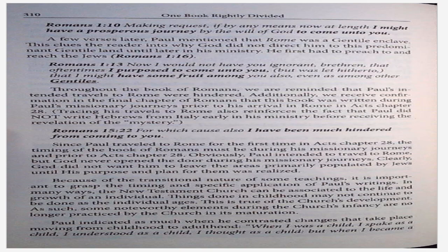Romans 1:13 — Now I would not have you ignorant brethren that oftentimes I purposed to come unto you, but was let hitherto that I might have some fruit among you also, even as among other Gentiles. Throughout the book of Romans, we are reminded that Paul's intended travels to Rome were hindered. Additionally, we receive confirmation in the final chapter of Romans that this book was written during Paul's missionary journeys prior to his arrival in Rome in Acts chapter 28. Tracing his travels to Rome also reinforces the fact that Paul did not write Hebrews from Italy early in his ministry before receiving the revelation of the mystery. Romans 15:22 — For which cause also I have been much hindered from coming to you.